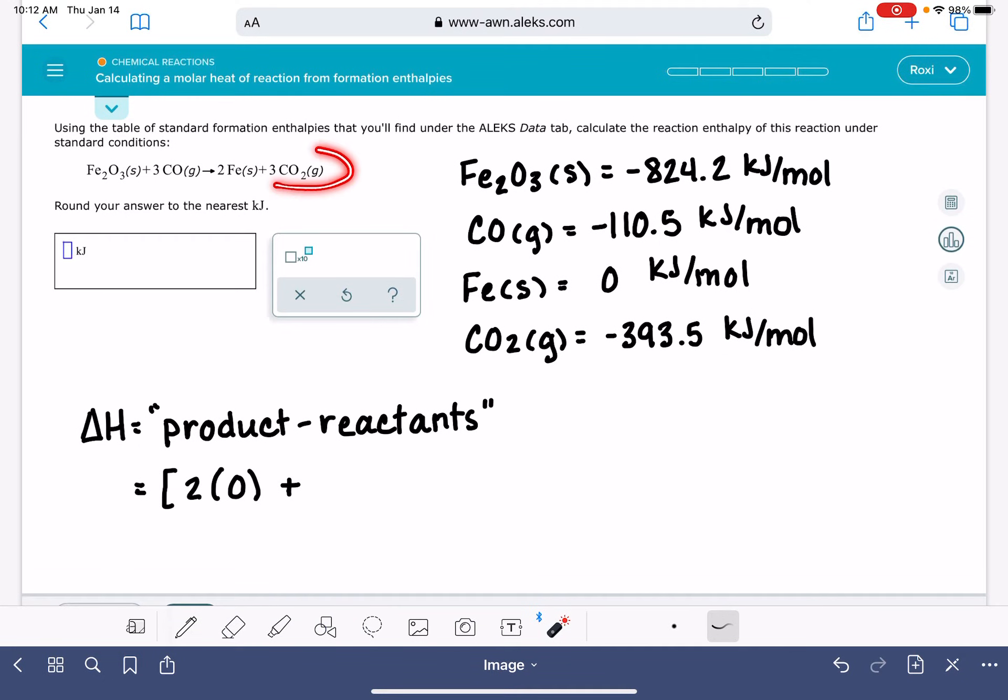CO2, the stoichiometric coefficient of CO2 is 3, and the delta H value of CO2 is negative 393.5. So that's all of our products together.